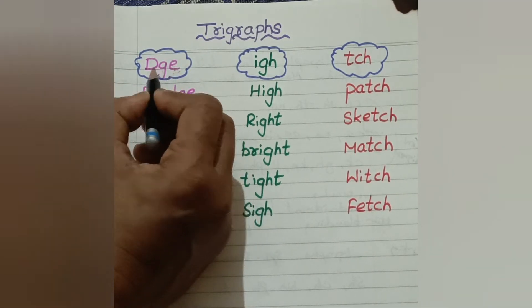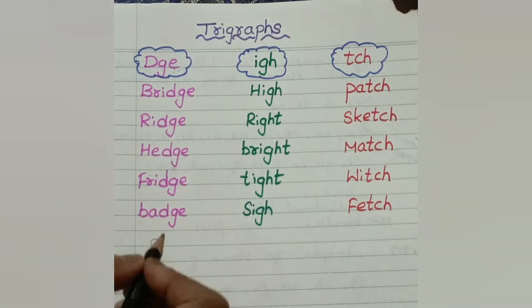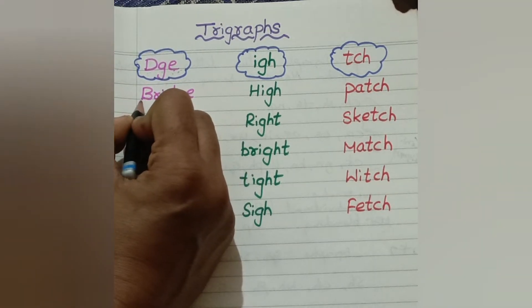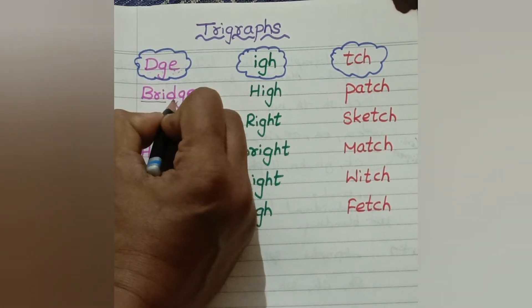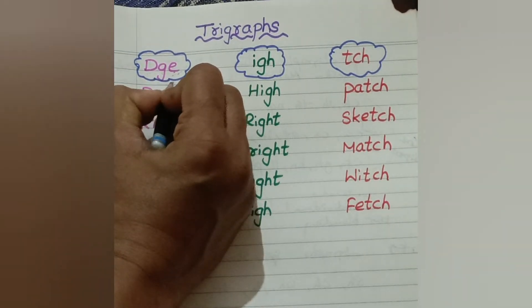D, G, E together combine to make a new sound like J. Bridge. Bridge. Here D is silent.